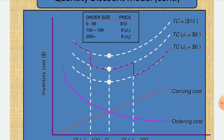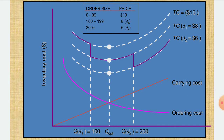Carrying cost and ordering cost remain the same; the intersection point where we find the optimum Q is similar. But because total cost differs with order size, we draw three graphs: the total cost for $10 is the uppermost graph, TC at $8 (D1) is just below, and TC at $6 (D2) is the lowest. These are labeled TC=$10, TC D1=$8, and TC D2=$6.